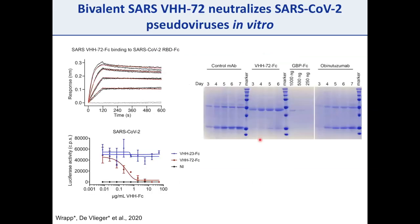SPR confirmed VHH72 bound to the SARS-CoV-2 RBD with about 40 nanomolar affinity. Structural alignment also showed VHH72 would trap the RBD in the up conformation — clashing with neighboring protomers and the S2 subunit underneath — effectively acting as a receptor mimic that prematurely triggers and neutralizes the virus. To address the fast off-rate, we engineered a bivalent Fc fusion protein, which showed very tight binding to SARS-CoV-2 RBD and potent neutralization of SARS-CoV-2 pseudoviruses. We are currently testing this in preclinical hamster trials, optimistic about moving to clinical trials.